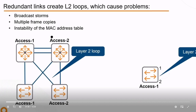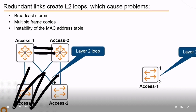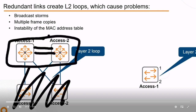When you have a redundant link between two switches — say between two core switches — that can introduce broadcast storms, multiple frame copies, and ultimately instability of the MAC address table. Basically, bad things happen.